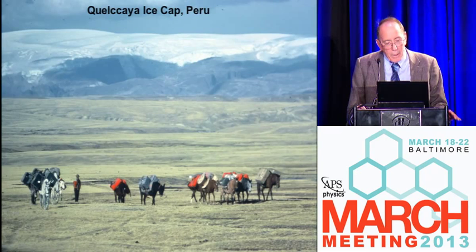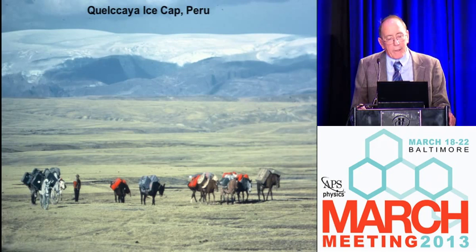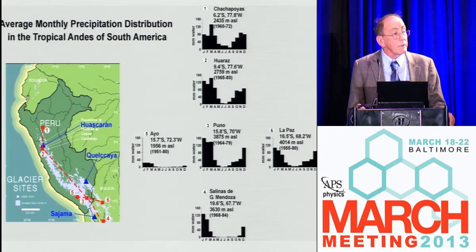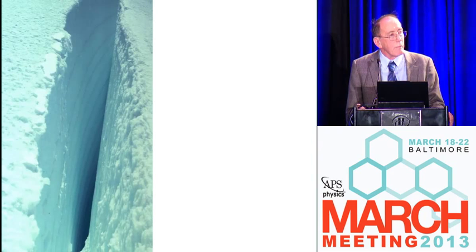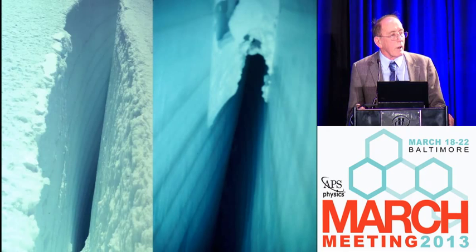I'm going to take you to one of these — the Kalkia Ice Cap, 14 degrees south of the equator in the Andes of Peru, right above the Amazon Basin. This shows the monthly precipitation — a very distinct wet and dry season. If you look down at a crevasse, you can actually see every dry season, every one of those bands. By measuring the thickness of those bands, you can get the net balance precipitation of the past.